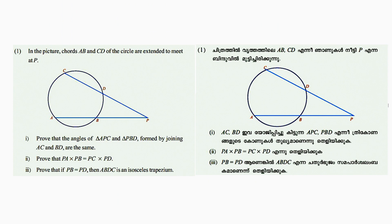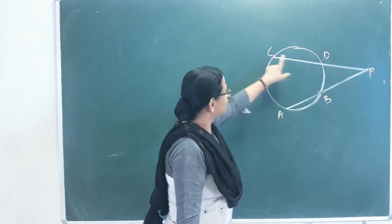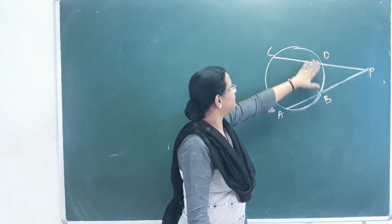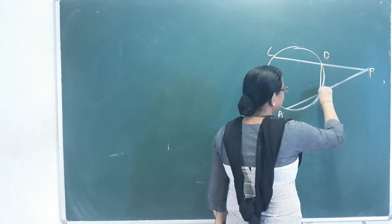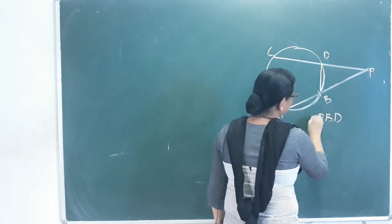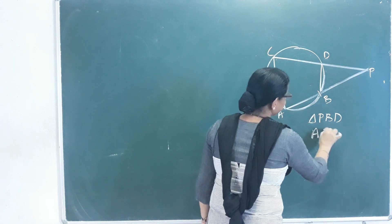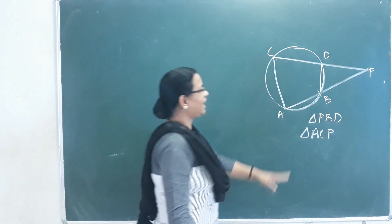In the first problem, page number 67: chords AB and CD of a circle are extended to meet at P. Prove that the angles of triangle APC and triangle PBD formed by joining AC and BD are the same. Prove that PA × PB = PC × PD. Prove that if PB equals PD, then ABCD is an isosceles trapezium. AB and CD do not intersect inside the circle; they intersect outside at point P. If we join AC, we call triangle ACP; if we join BD, we call triangle PBD.